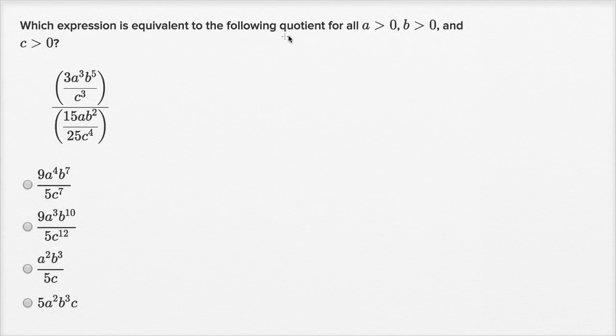Which expression is equivalent to the following quotient for all a is greater than zero, b greater than zero, and c greater than zero?